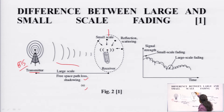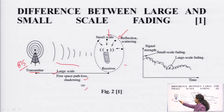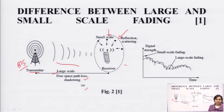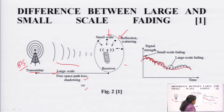This is the free space path loss, this is the signal that has been radiated. In large scale fading, the distance between the transmitter and receiver is quite large, while in small scale fading, the transmitter exists at a very small distance from the mobile. Both are characterized based on the distance between transmitter and receiver, and in both cases, the signal quality will degrade due to fading.